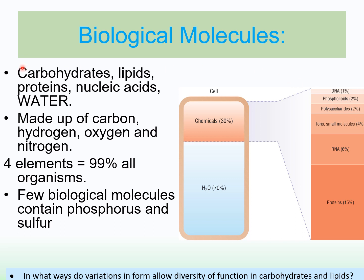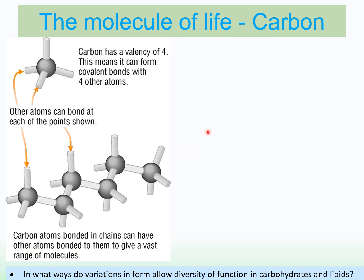Biological molecules are the molecules that make up living things, including carbohydrates, lipids, proteins, water, and nucleic acids. The main three elements found in living things are carbon, hydrogen, and oxygen, but nitrogen is also critical — particularly in amino acids and therefore proteins. Those four elements make up 99% of all living organisms. Other biological molecules include extras like phosphorus, for example in ATP, and sulfur in some amino acids.